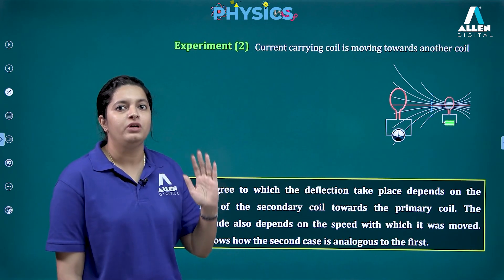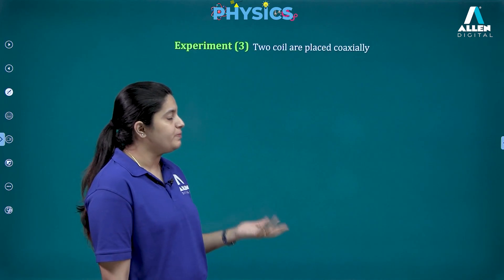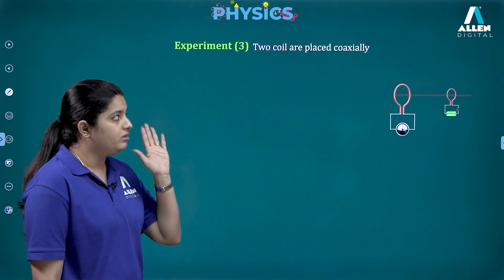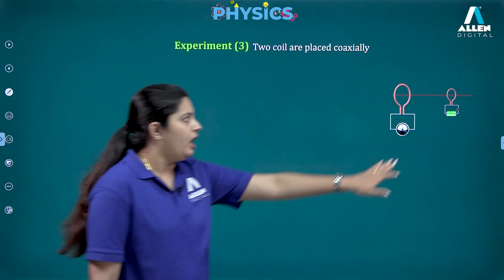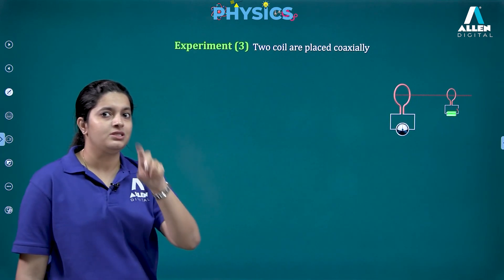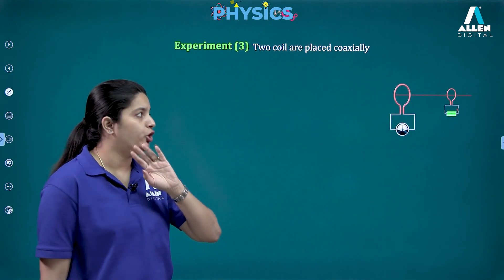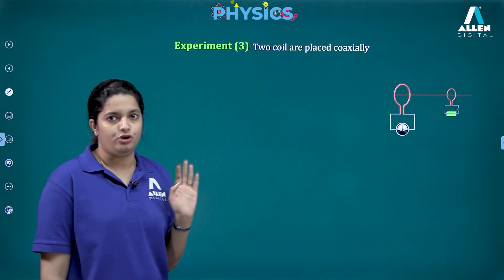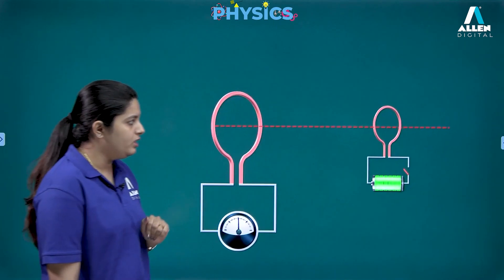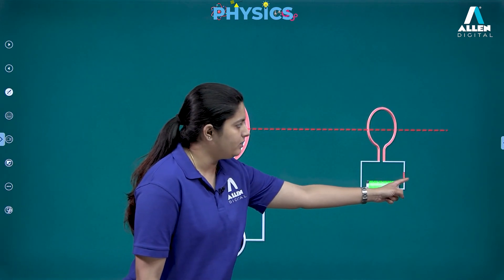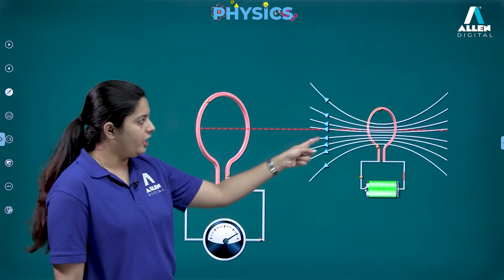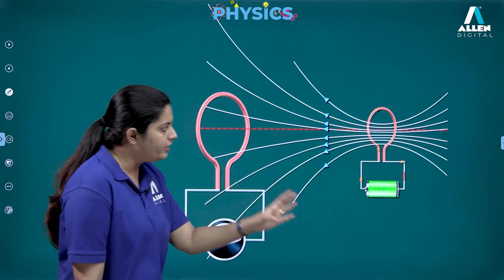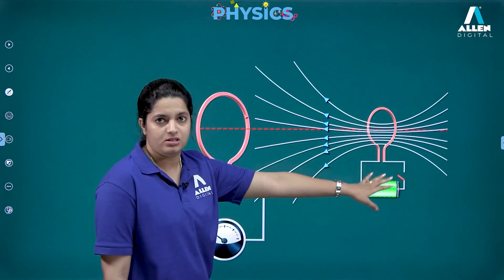This led him to perform a third experiment where he did not move the source coil itself. He took two coils again; the secondary coil was connected to a power source but was now stationary, attached to a switch so it could be switched on and off. Initially when he switched on the circuit, current flowed and some deflection was observed in the galvanometer.